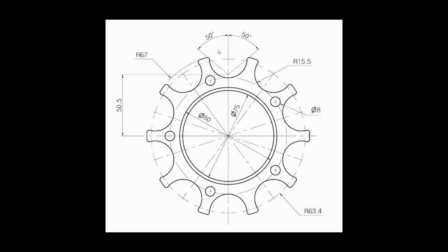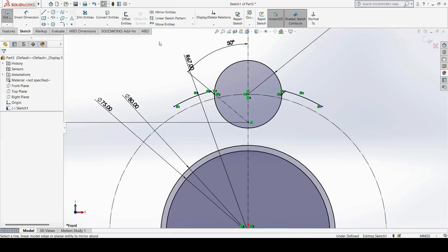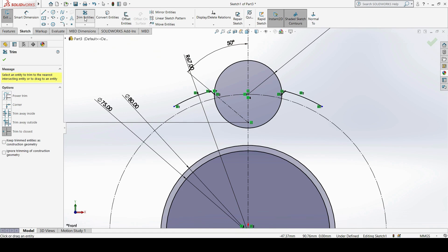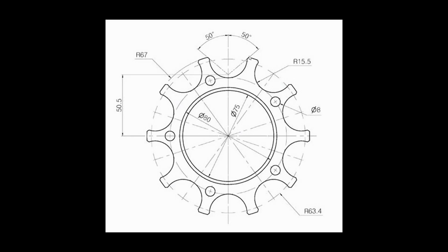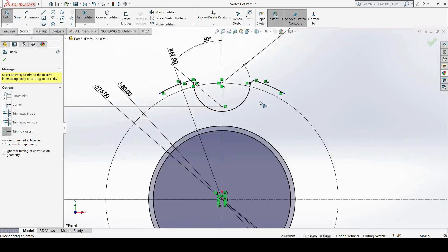Next, I will trim the unwanted elements using the Trim option. I remove this profile and this profile. After trimming, we have a total of 10 profile slots as you can count: 1, 2, 3, 4, 5, 6, 7, 8, 9 — 10 total.